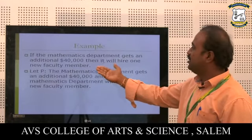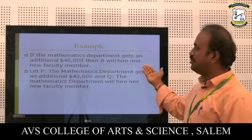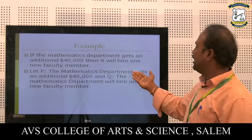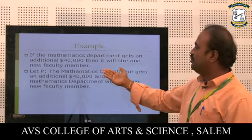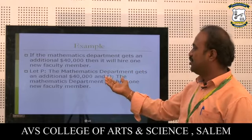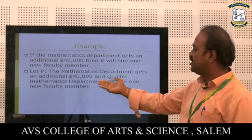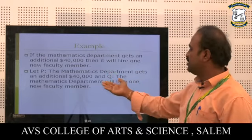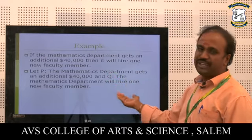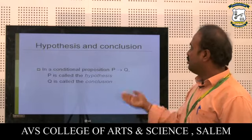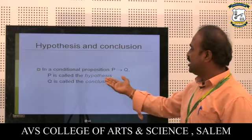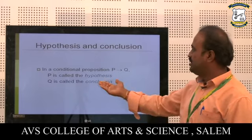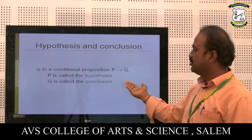Example for conditional: If the mathematics department gets an additional $40,000, then it will hire one new faculty member. Let P be 'The mathematics department gets an additional $40,000' and Q be 'The mathematics department will hire one new faculty member.' In a conditional P → Q, P is called the hypothesis and Q is called the conclusion.